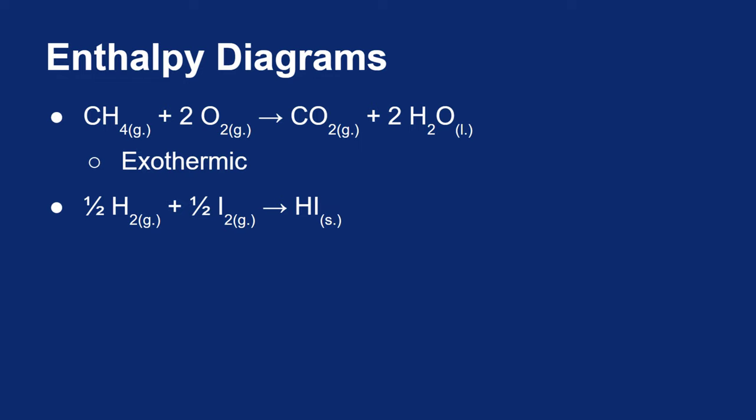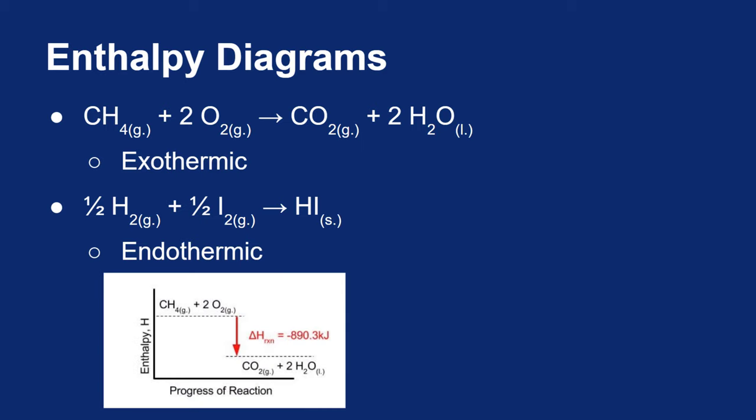Looking at the enthalpy diagrams for these reactions, methane would have a negative delta H—the change in enthalpy decreases. When you burn one mole of methane with two moles of oxygen, the delta H is negative 890.3 kilojoules.